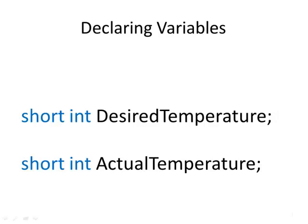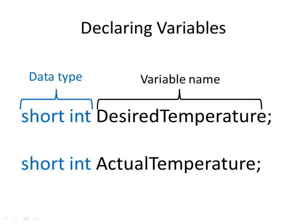Okay, so if you look at this, what you see is that my data type is a short integer. And my variable name on the first one is desired temperature. My second one, the data type is also a short integer. And this variable is called actual temperature. Now, why did I choose short integer type for these variables?